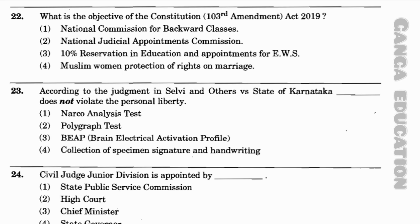Question number 23: According to the judgment in Selvi and Others versus State of Karnataka, which of the following does not violate personal liberty? Option 1: Narco Analysis Test; option 2: Polygraph Test; option 3: BEAP (Brain Electrical Activation Profile); option 4: Collection of Specimen Signature and Handwriting. The correct answer is option 4 — Collection of Specimen Signature and Handwriting.